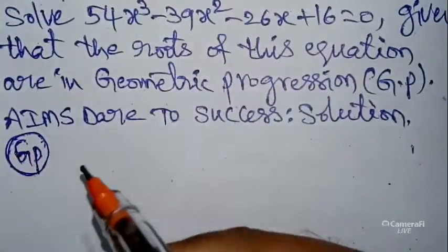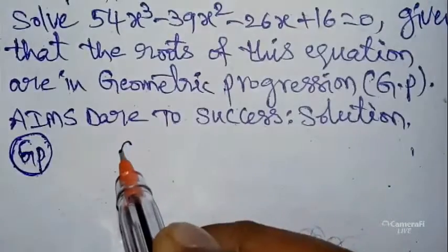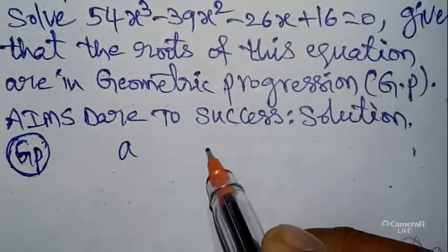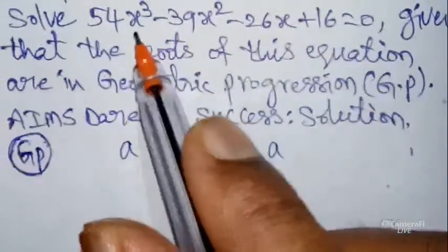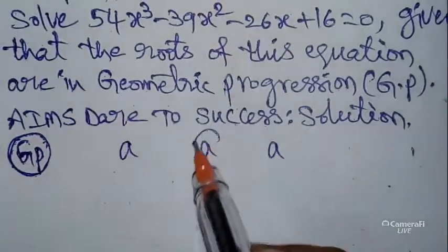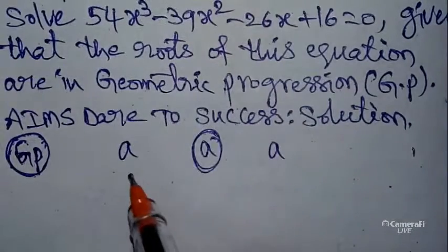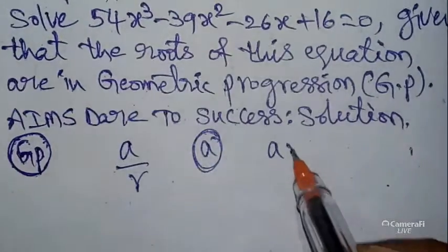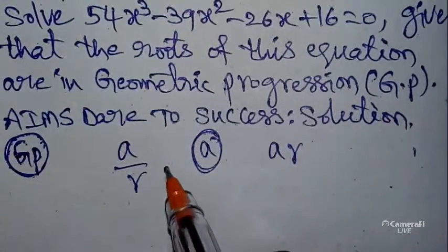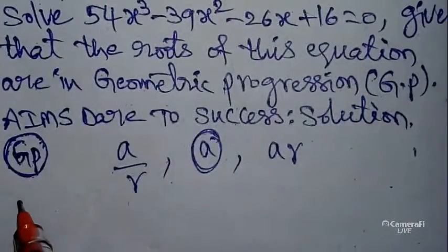The given equation is in geometric progression. In GP, the logic is: the given equation has degree three. So take three terms: a. The middle term is a; don't disturb it. Left side of a, you take a common ratio r, you divide — so a/r. Right side of a, you multiply with r — so ar. Therefore a/r, a, ar are the roots for this equation.